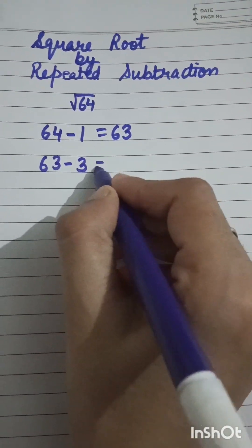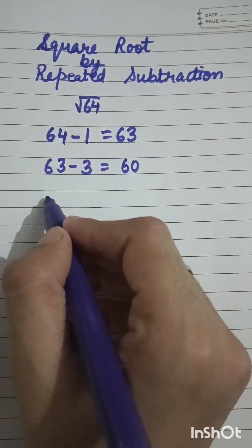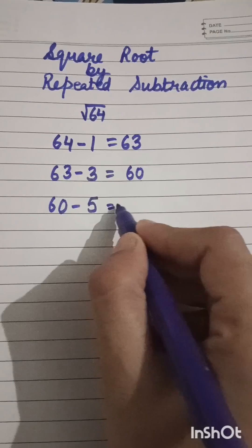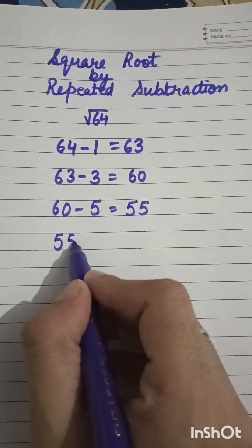After this, 60 minus the next odd number 5, answer is 55. Now next number is 55 minus 7, this is 48.